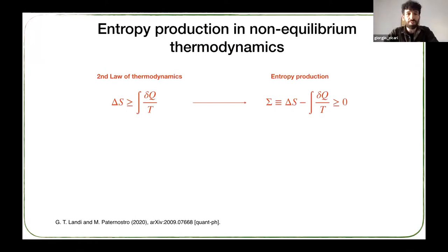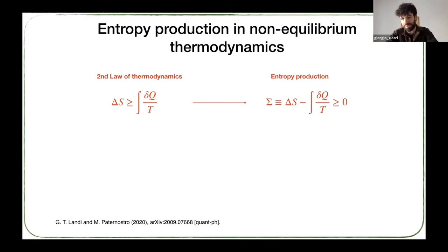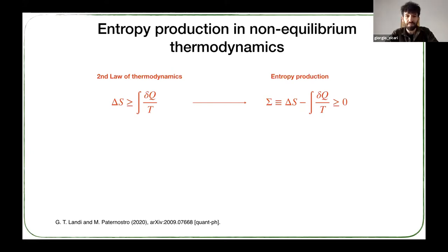We know from the second law of thermodynamics that whenever a system undergoes a transformation from an initial state to a final state, the change in entropy is bounded: delta S is greater than or equal to the integral along the path connecting the initial and final states of delta Q — the heat exchange between the system and the environment — over T, the absolute temperature at which this exchange happens. The equality holds for reversible processes, and from this we can define entropy production, which quantifies the amount by which we fail to attain reversibility.